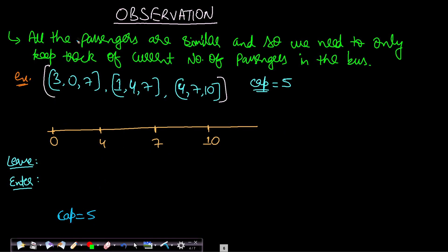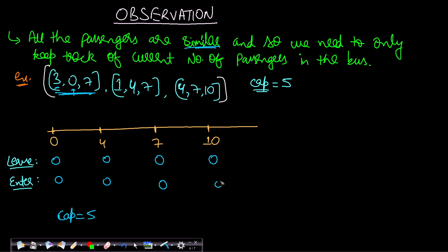Now let's look at a key observation that will help solve the problem. Since all passengers are equivalent, we only need to track the current number of passengers in the bus. We track how many passengers are entering and leaving at any bus stop. Looking at the trips array, we can fill in an enter and leave list for each stop, initialized to zero.